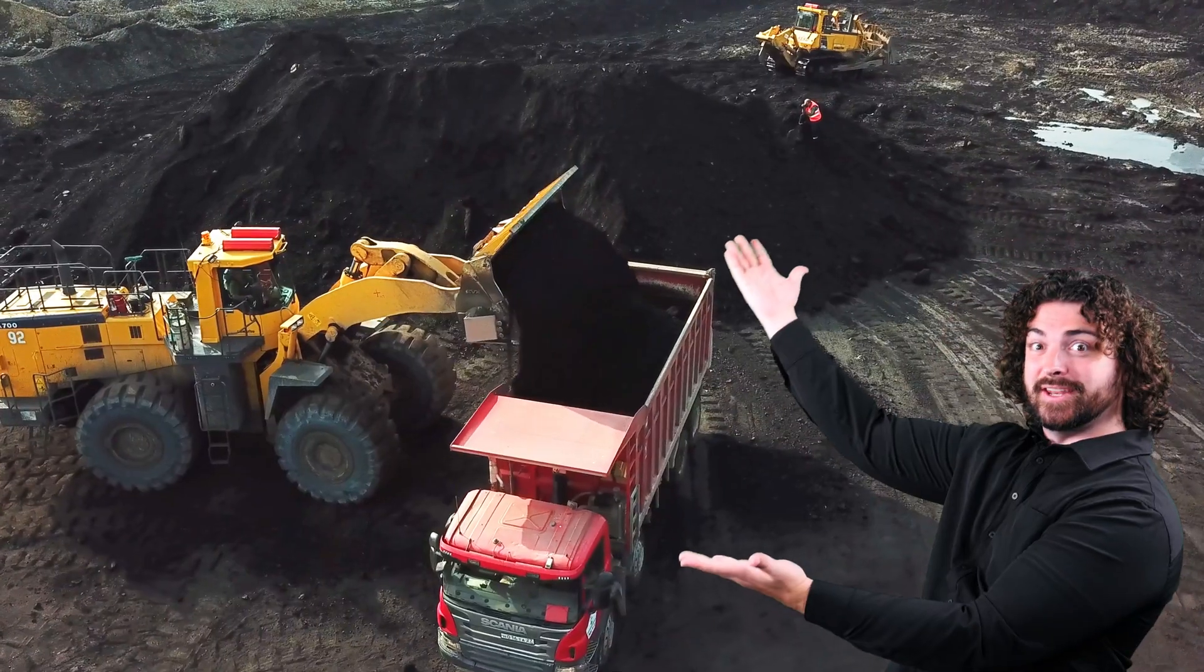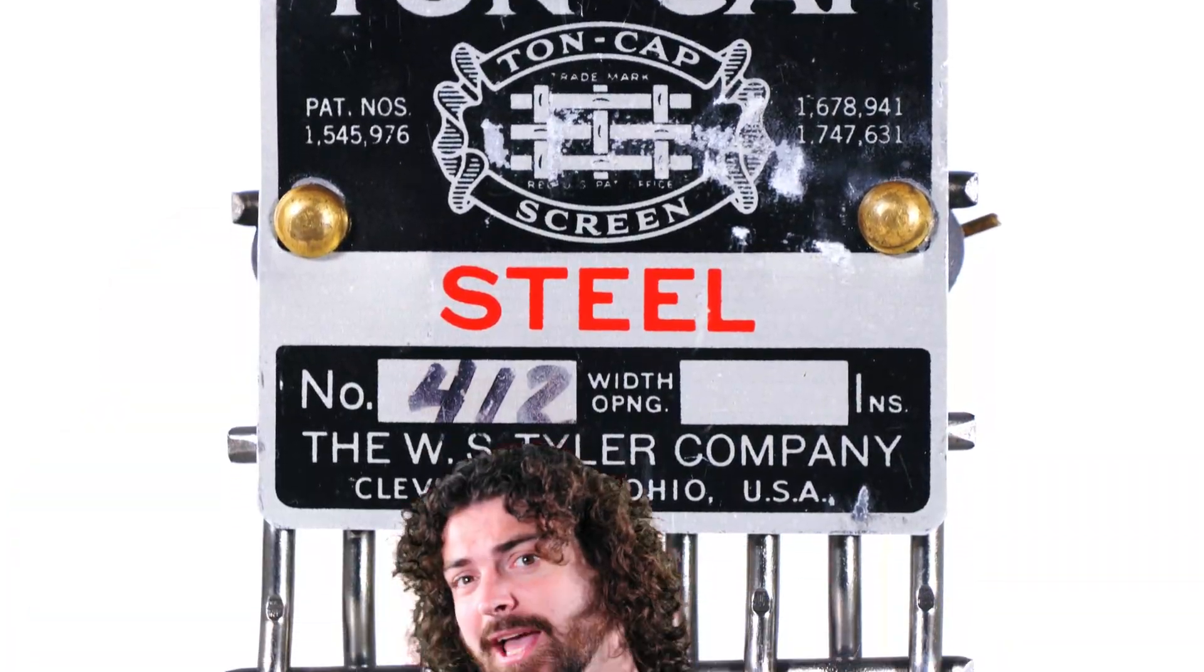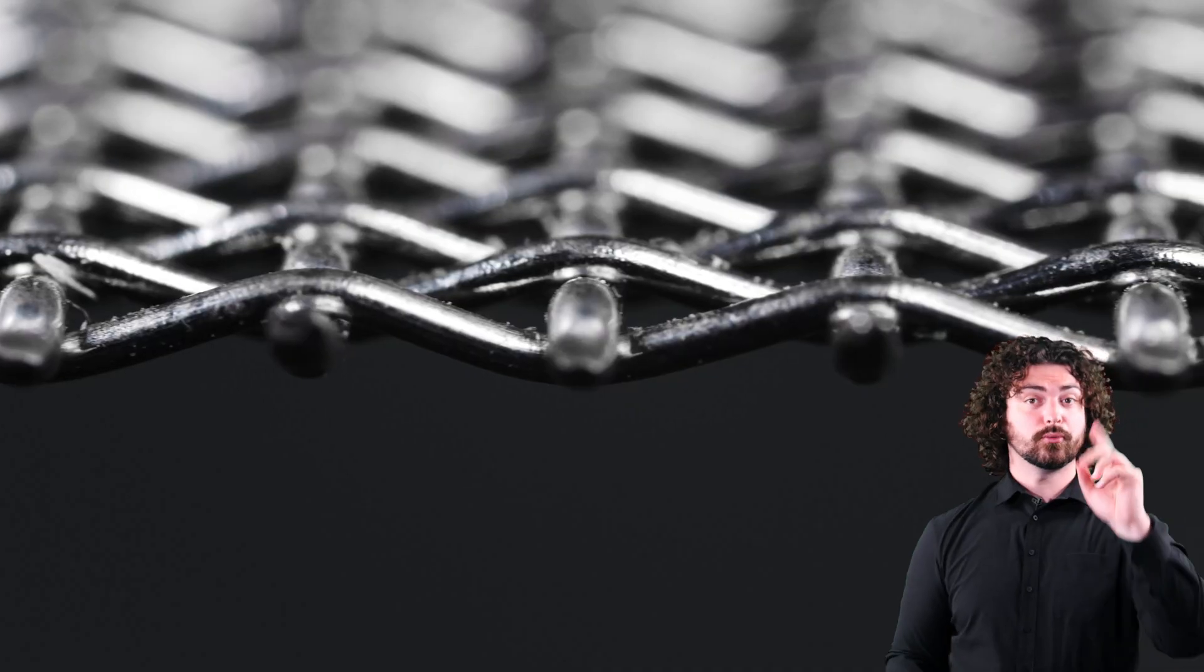Now for rectangular openings, you'll find a lot of that in the aggregate industry. If you care about the width of the mesh and not so much the length, then you can use a type of mesh called ton cap. Ton cap is short for tonnage capacity. The reason why you'd want to use ton cap is to make the process faster.